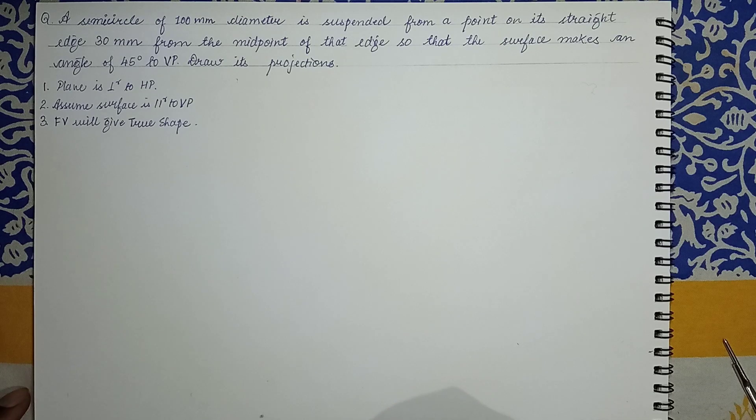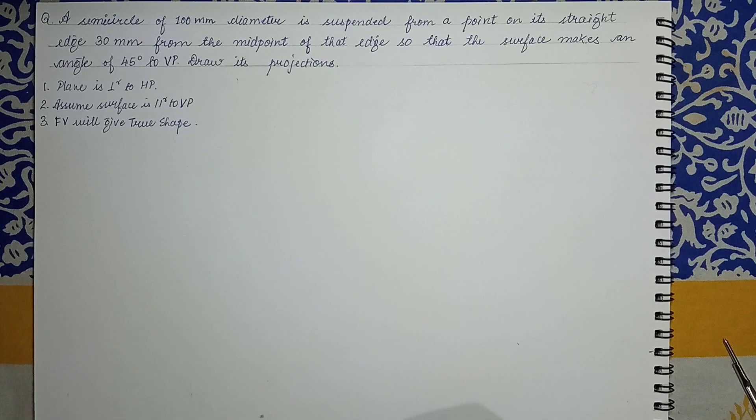Hello students, this is the second problem for suspended planes. In the last video we saw a similar type of problem with an isosceles triangle. In this problem we have a semicircle of diameter 100mm which is suspended from a point on its straight edge that is 30mm from the midpoint of that edge so that the surface makes an angle of 45 degrees to VP. Draw its projections. In this type of plane we have certain assumptions.